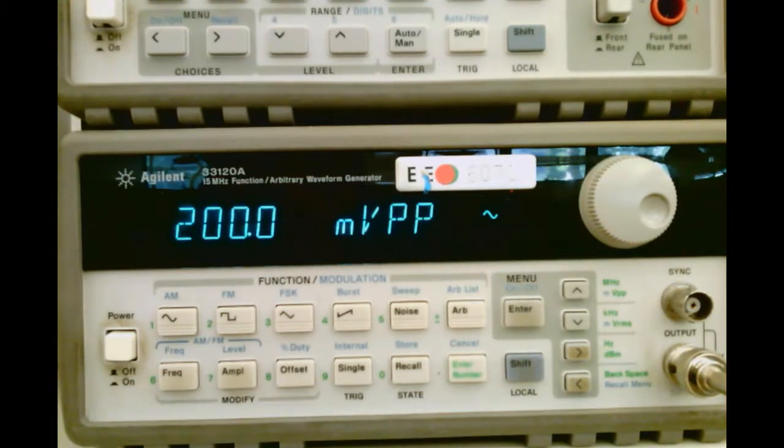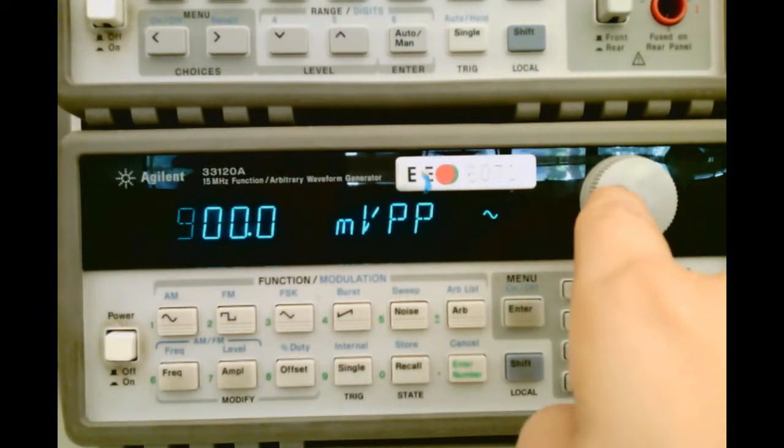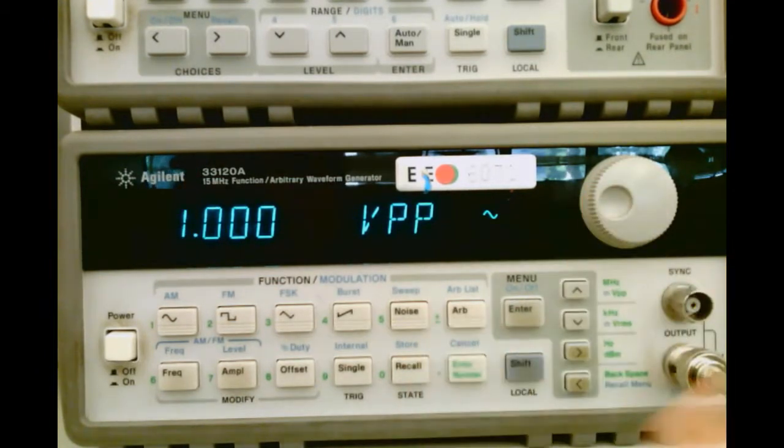I can change my amplitude. Again, I can use the arrow keys to select which decimal location I'd like, or which digit I'd like, and use the knob to change the value. So let's make it a 1 volt peak-to-peak signal.